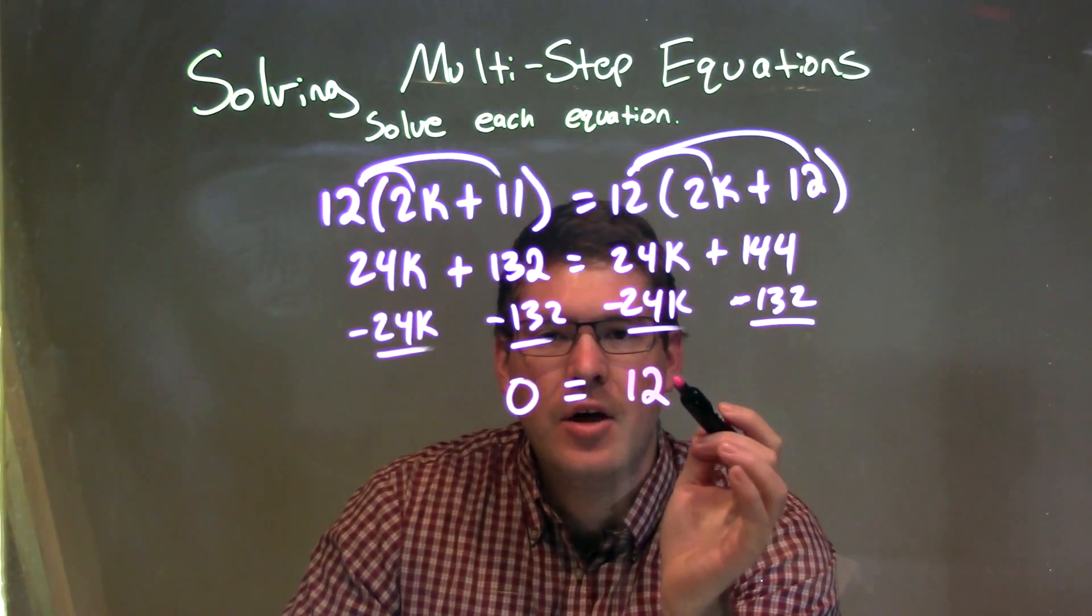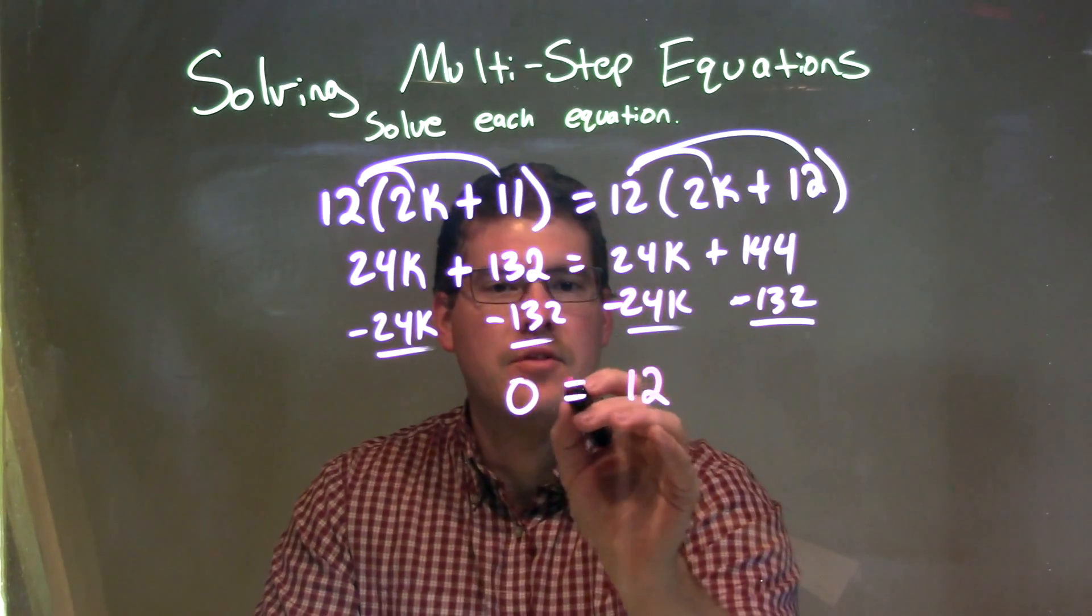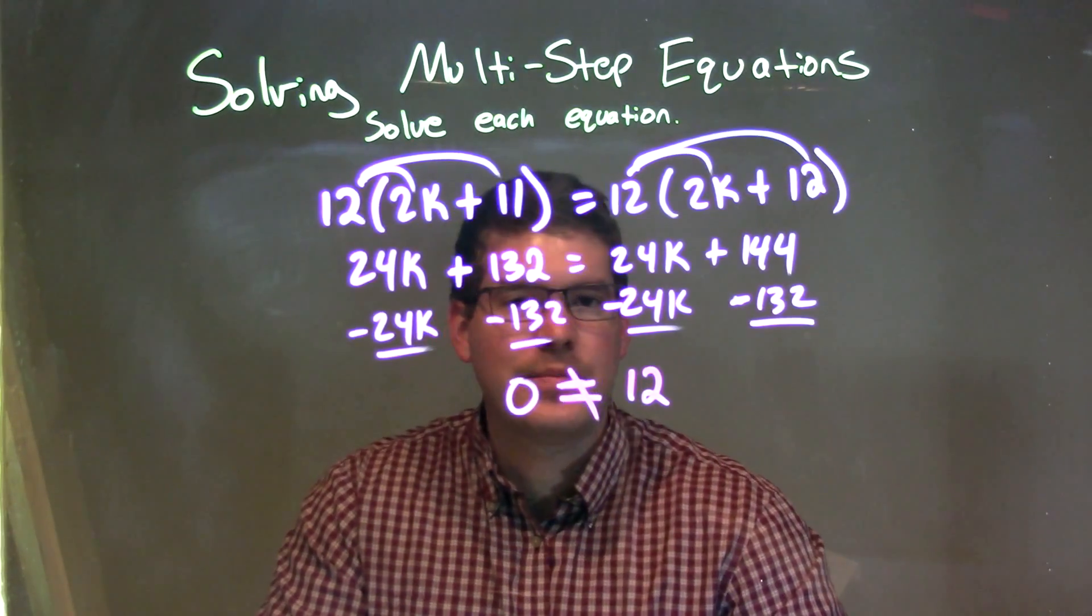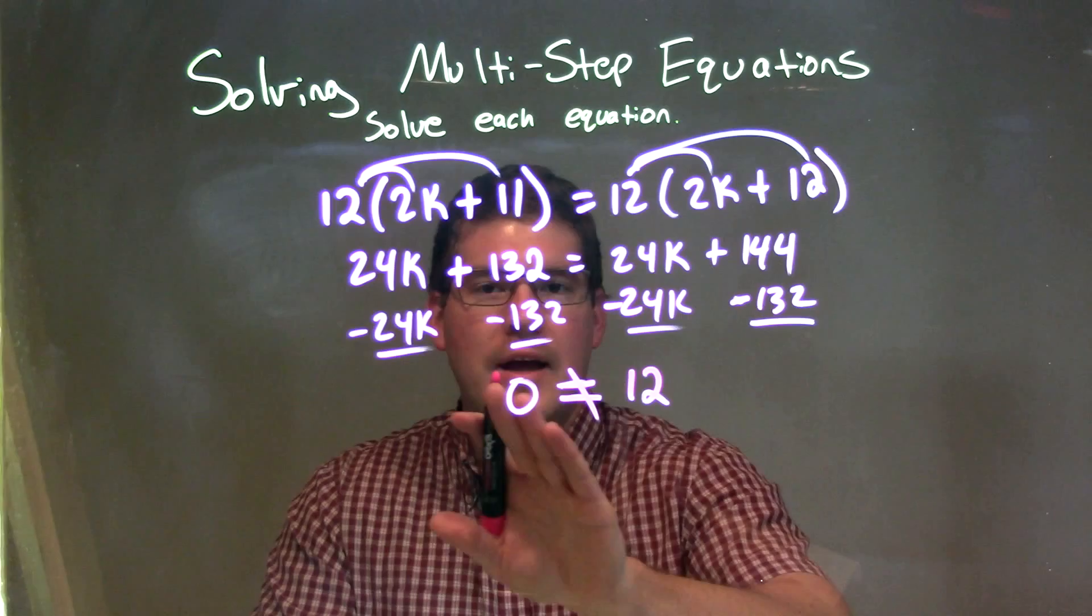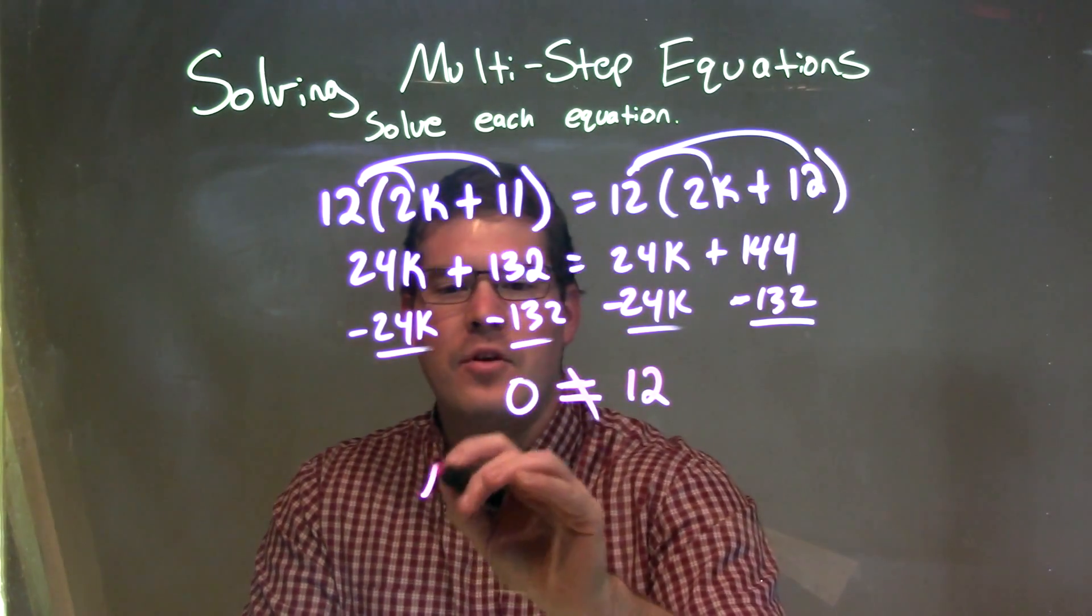So what happens there? Well, does 0 equal 12? No, 0 does not equal 12. That's false. Since we came to something where a number equals another number, and it wasn't true, it wasn't equal, this is no solution.